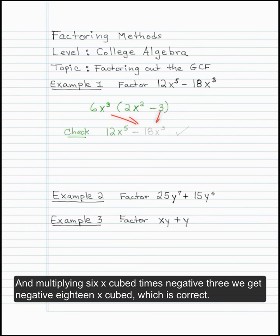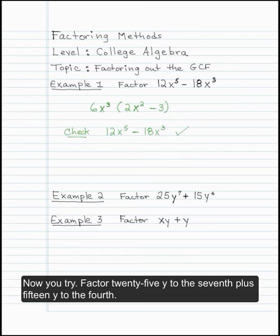Multiplying 6x cubed times minus 3, we get negative 18x cubed, which is correct. Now you try.